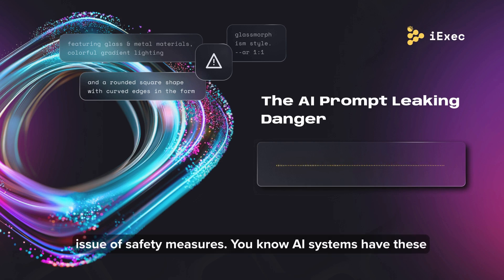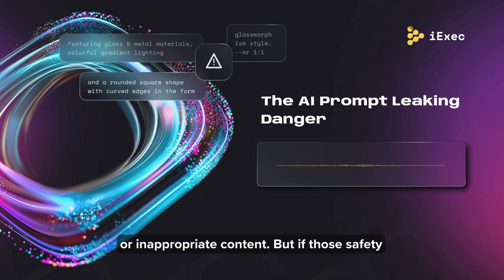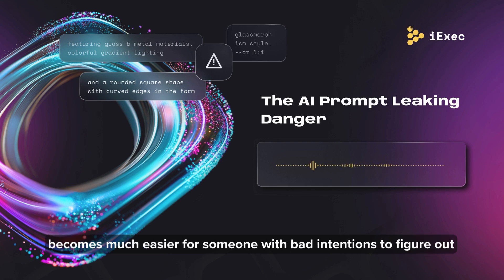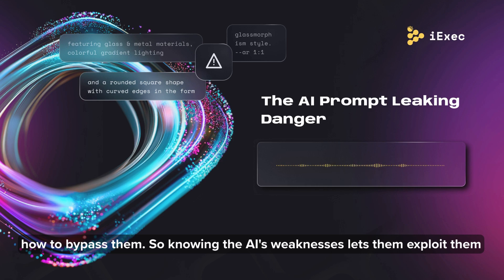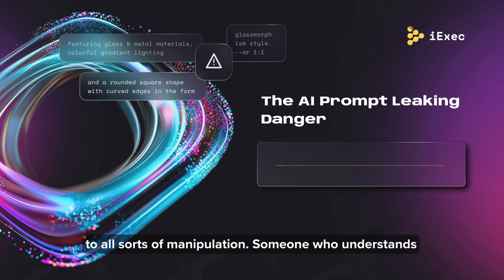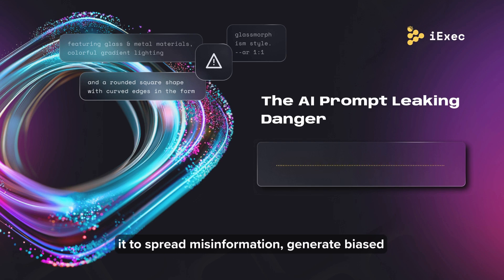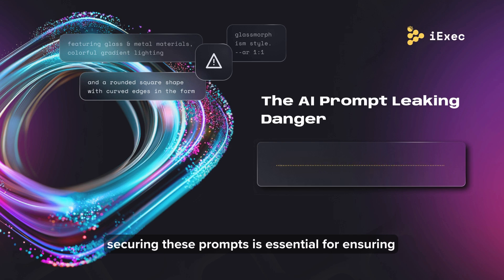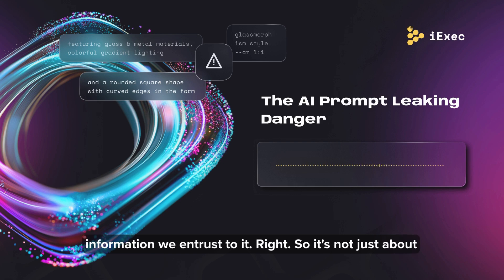Then there's the issue of safety measures. AI systems have these guardrails built in to prevent them from generating harmful or inappropriate content. But if those safety mechanisms are exposed through a prompt leak, it becomes much easier for someone with bad intentions to figure out how to bypass them. Knowing the AI's weaknesses lets them exploit them, opening the door to all sorts of manipulation.